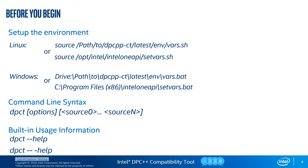Set the environment for the tool using the following commands after installation. You can set the environment for all tools from the Base Toolkit using the setvars script. The general invocation syntax from the operating system shell is "dpct" with optional arguments and source files. You can get the list of Intel DPC++ Compatibility Tool specific options by passing the "--help" option. To see the list of language parser options, pass "--help" using the extended syntax.